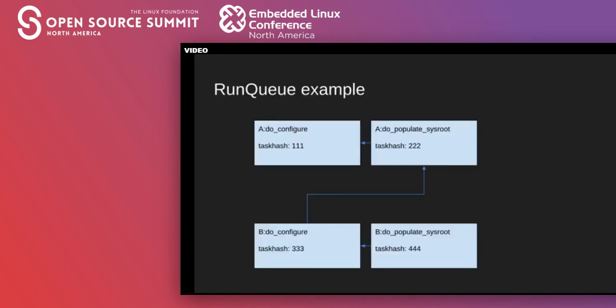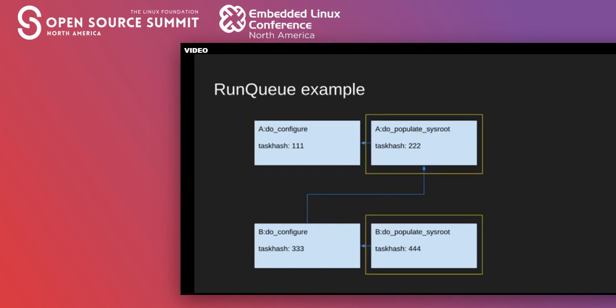To understand how hash equivalents accelerates builds, I'm going to give a very simplified example of some tasks in the BitBake run queue. First, we will examine how the run queue works when hash equivalents is not used. In this example, there are two recipes, A and B, and each recipe has two tasks: DoConfigure and DoPopulateSysRoot. Dependencies are shown with blue arrows. So, for example, B DoPopulateSysRoot depends on B DoConfigure, and B DoConfigure depends on A DoPopulateSysRoot.